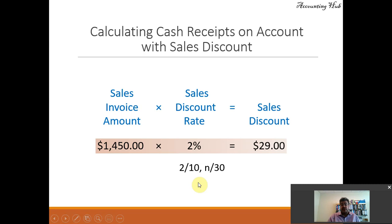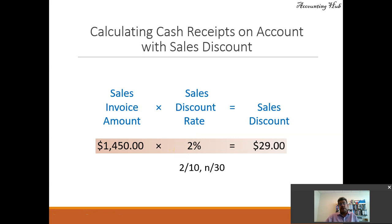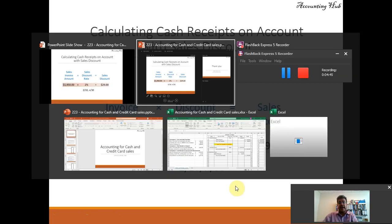On the invoice you will usually see terms written as '2/10 n/30.' This means: if you pay within 10 days, I give you a 2% discount — so I give you $29 off. If you don't pay within 10 days, your due date is in 30 days starting from the day of purchase. For example, if the sale is on September 1st, you can pay by September 10th with a 2% discount, or your full payment is due by September 30th.